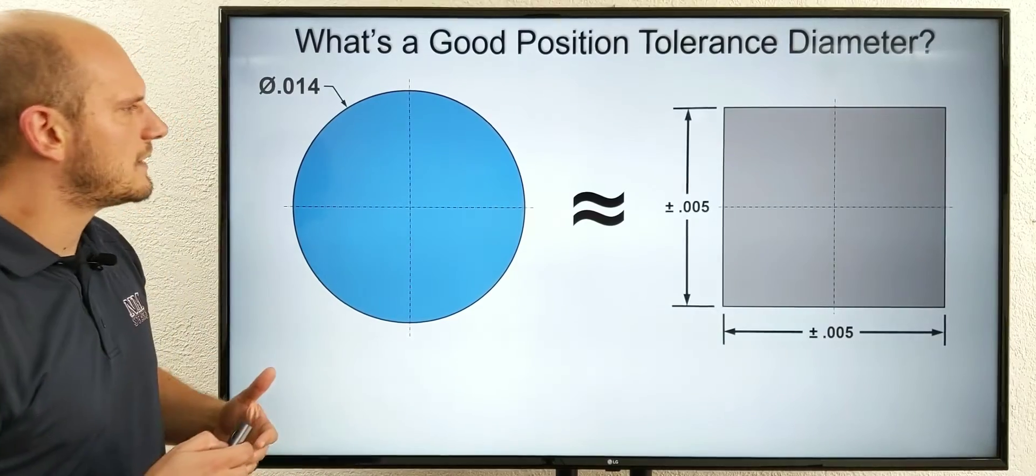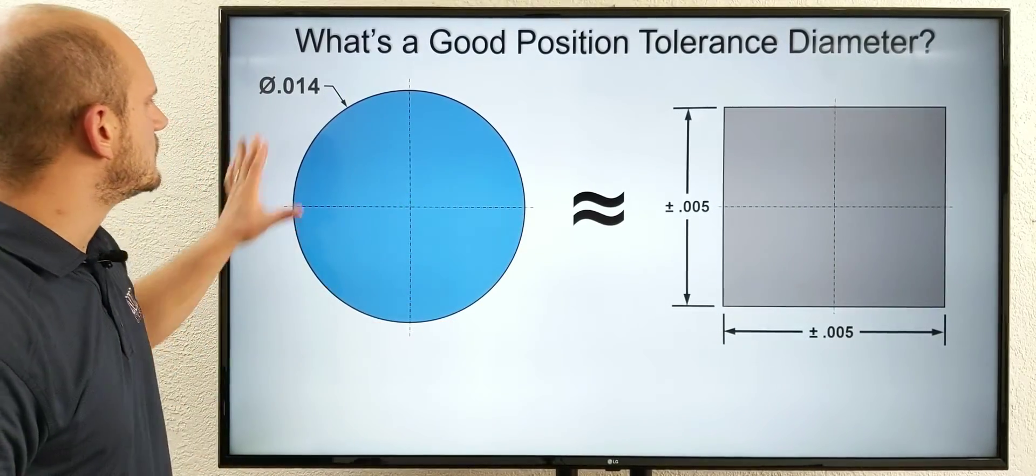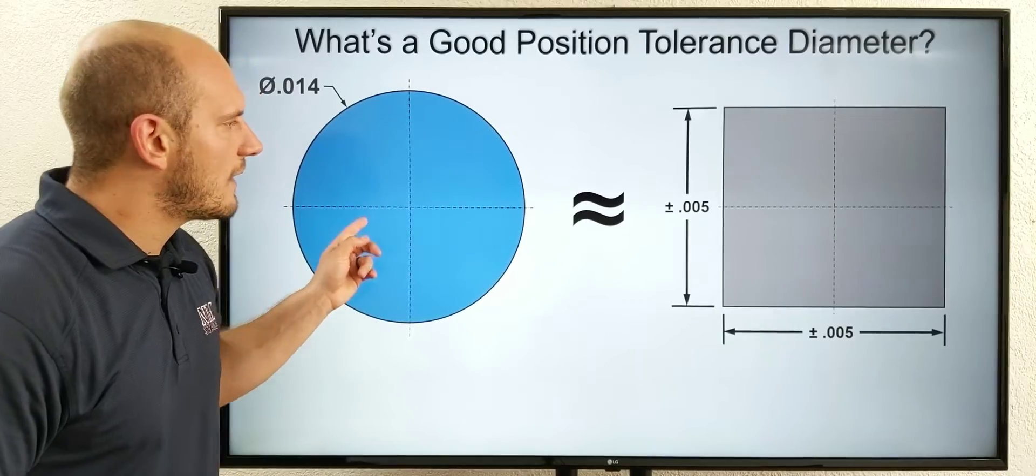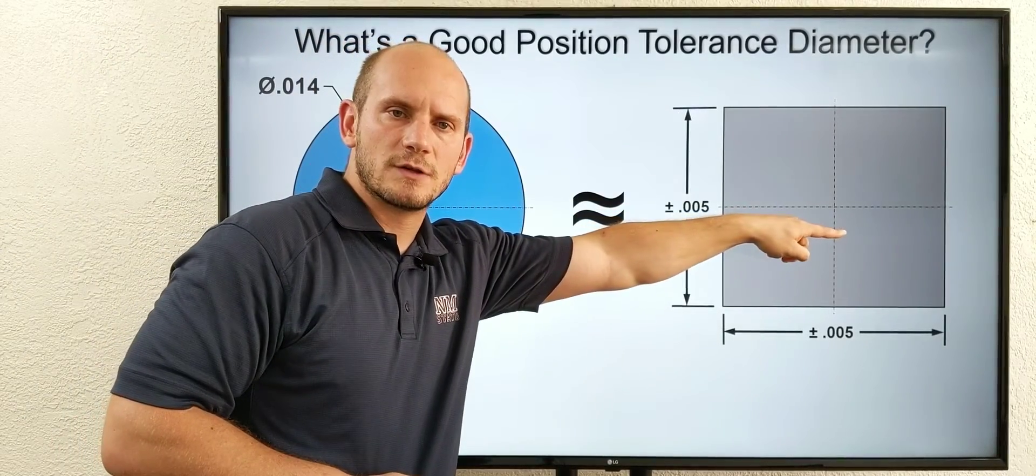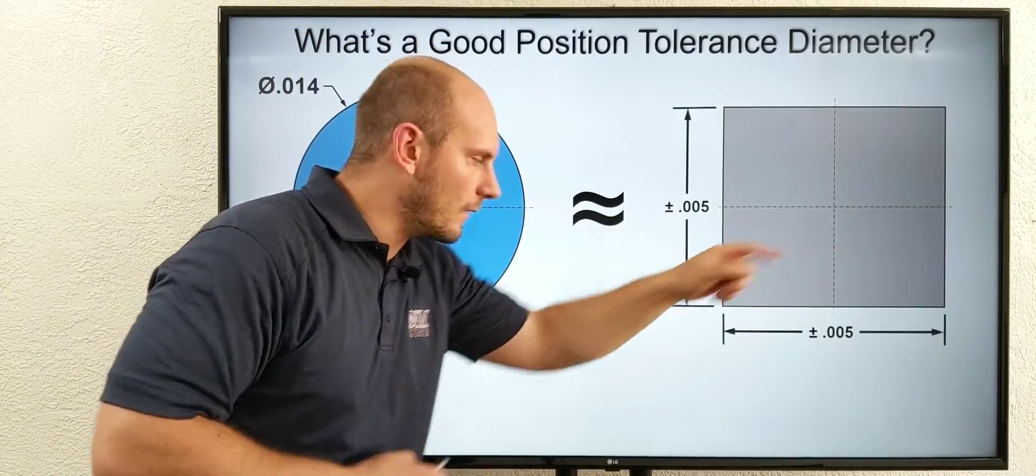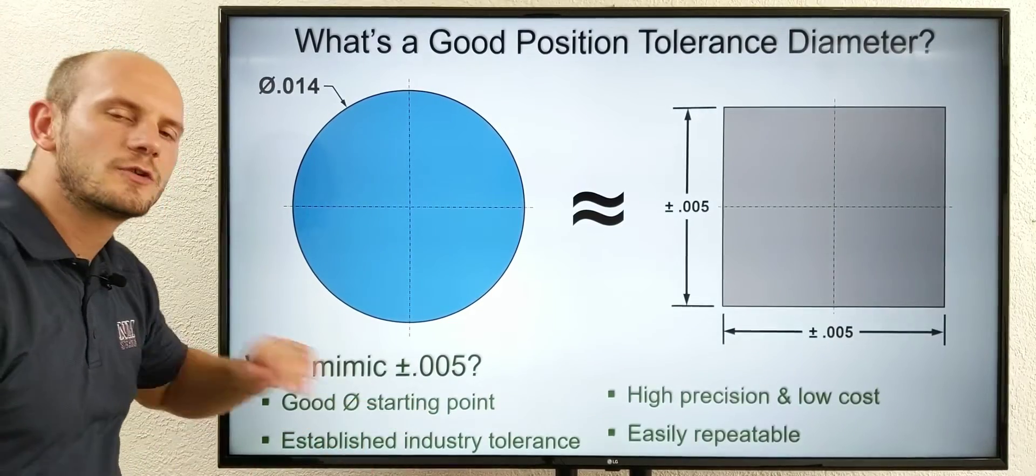Your next question might be, I'm trying to learn this new style of GD&T position tolerancing - why do I want it to mimic this old traditional rectangular tolerance? Well, it's actually a great starting point.